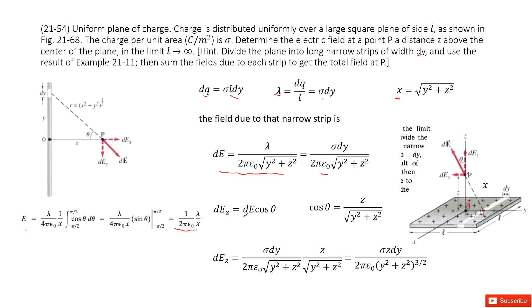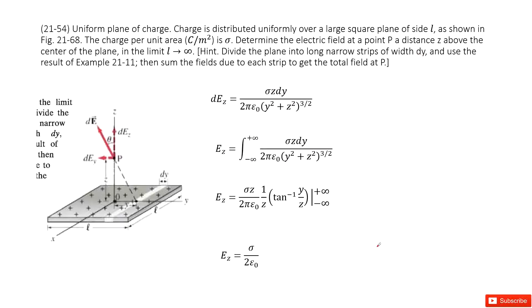So we have dE_z as dE times cosine theta. And this cosine theta is just z over x. Now you input the dE and the cosine theta inside. Simplify it. You get the dE_z in this function.